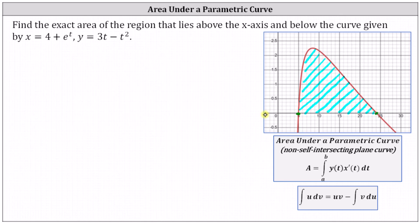We know every point on the x-axis has a y-coordinate of zero, and therefore to find the t values that give us the x-intercepts, we set y equal to zero and solve for t. Using the parametric equations, if we set y equal to zero, we have zero equals three t minus t squared. Factoring t from the right, we have t times the quantity three minus t. The product equals zero when t equals zero or when t equals three.